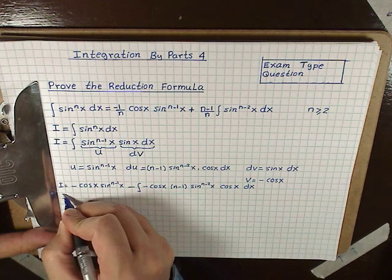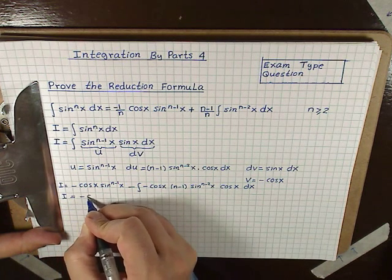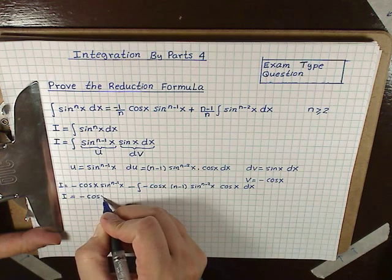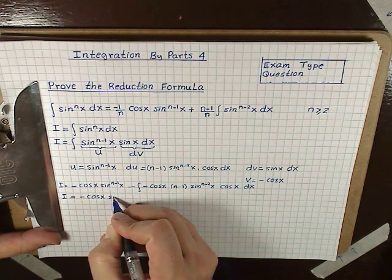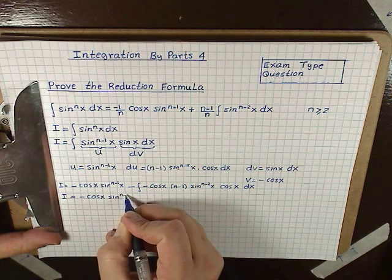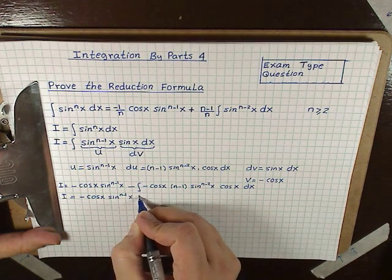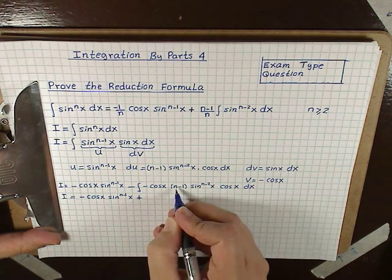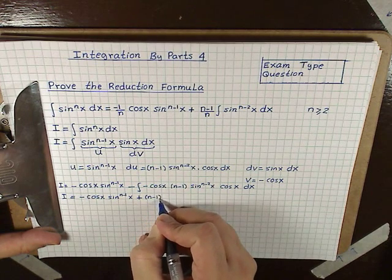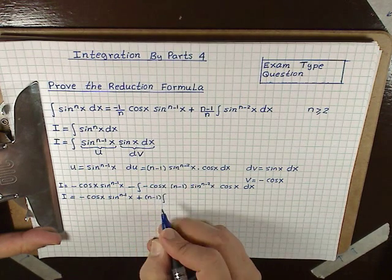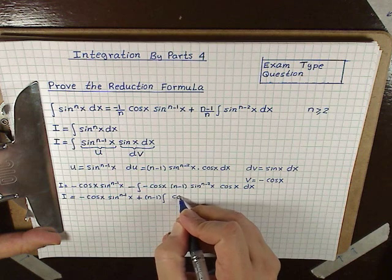Let's clean this up. We get -cos(x) sin^(n-1)(x). Minus times minus is plus, so we pull out (n-1) and integrate cos(x) times cos(x), giving us cos²(x).